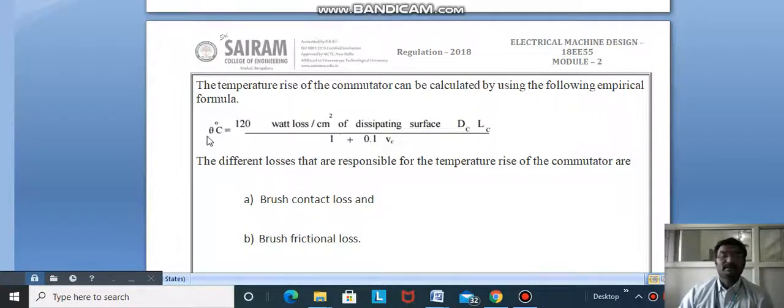The temperature rise of the commutator can be calculated using the following empirical formula: degrees Celsius equals 120 times watt loss per cm² of dissipating surface Dc Lc divided by 1 plus 0.1 Vc.